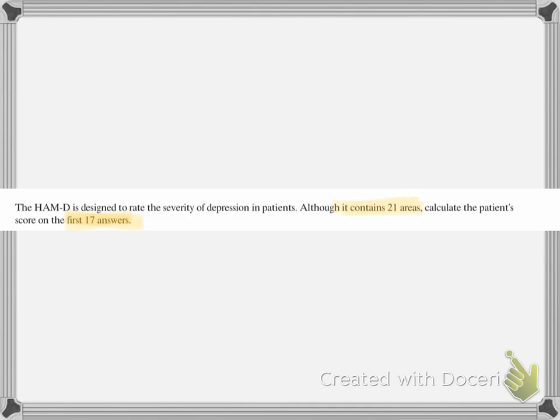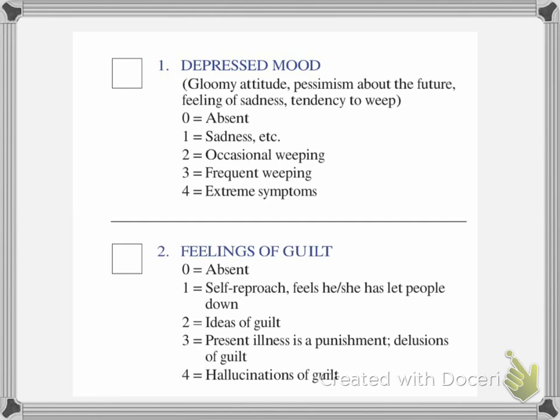A counselor or psychologist administers it. It's designed to rate the severity of depression in patients and contains 21 areas, but we actually use the first 17 to get a score — more on that later in the talk. We're going to go through each of the questions.